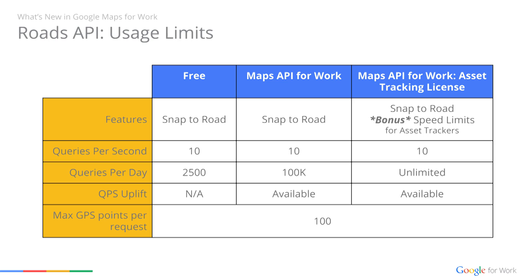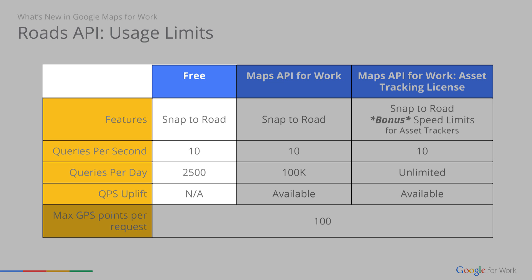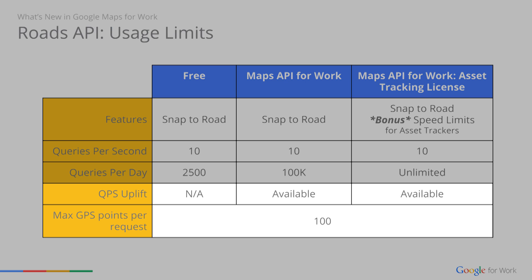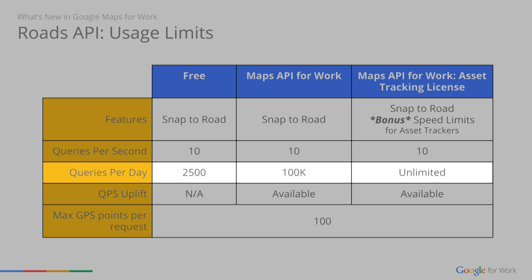So what if I'm a developer and I've seen your demo and I'm interested — can I get started using it right away? I'm glad you asked that, Dan. This table captures the various tiers for Roads API. There's a free version for developers to test it out and do POCs. For our Maps for Work customers, Roads API is available at no additional cost. Speed limits, though, is a bonus feature only available to asset trackers today. QPS and maximum number of points per request are the same across tiers, with uplifts available for QPS, while QPD increases through the tiers.